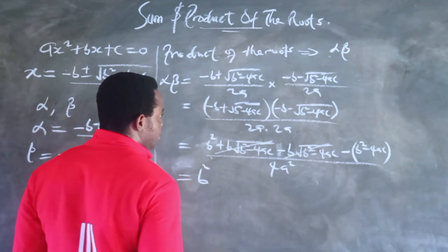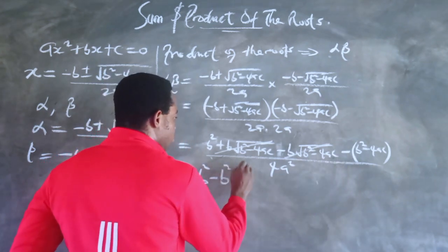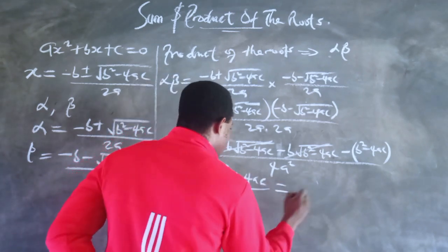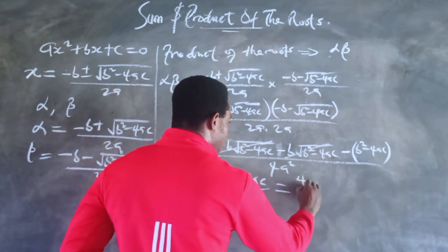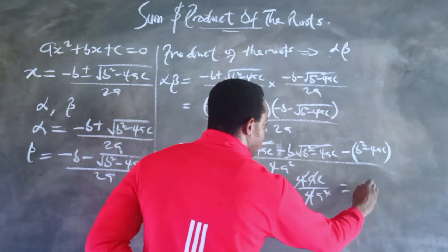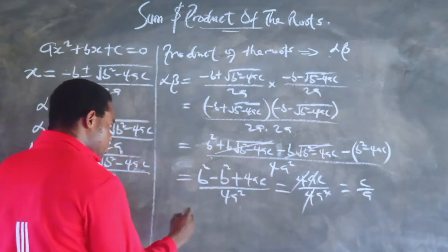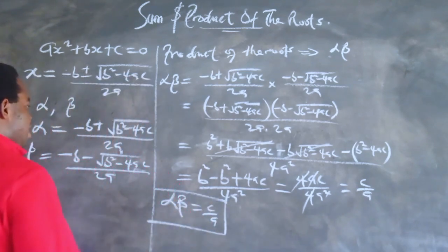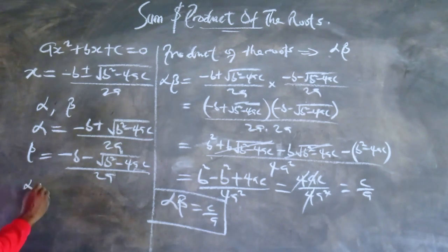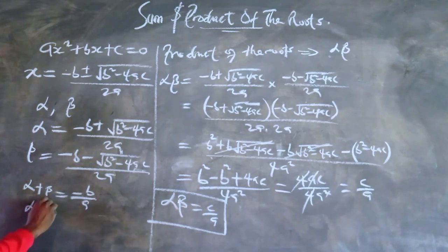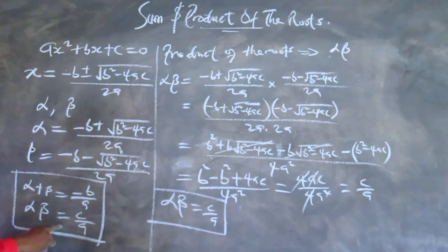After cancellation, the 4s cancel and one factor of a reduces, giving us c/a. So the product of the roots, alpha times beta, equals c/a. Without having to solve the quadratic equation, we simply identify the constant c and the leading coefficient a, plug them in, and we have the product of the roots.